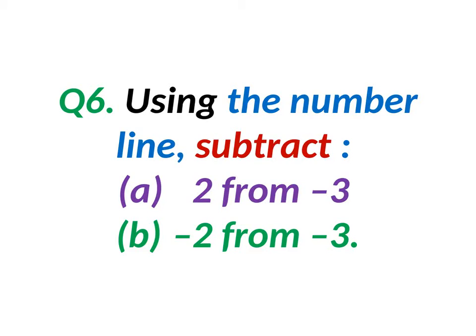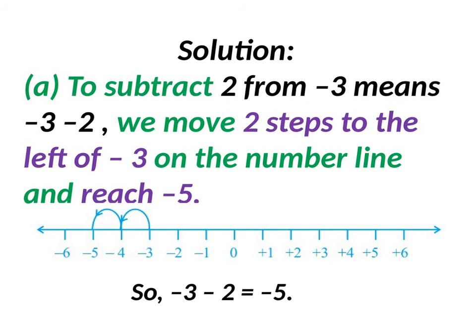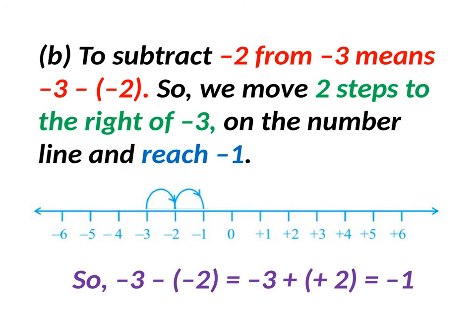Using number line, subtract 2 from minus 3. Draw the number line. From minus 3, go left 2 points, reaching minus 5. The same way, minus 3 minus minus 2, which is plus 2. From minus 3, go right 2 points, reaching minus 1. The answer is minus 1.